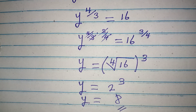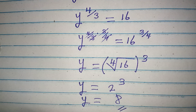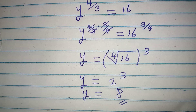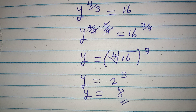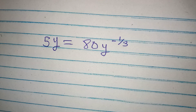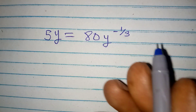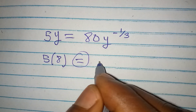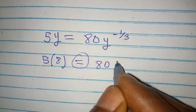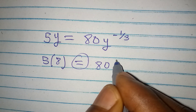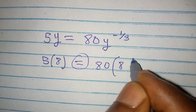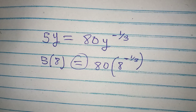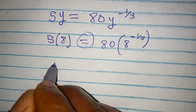So this is the value of y that will satisfy the equation. But we can check it to be sure we are correct. Let's confirm it quickly. This is the equation, and we are having that y is 8. So we have 5 multiplied by 8, and will this be equal to 80 multiplied by 8 to the power of negative 1 over 3? This times this will give us 40.